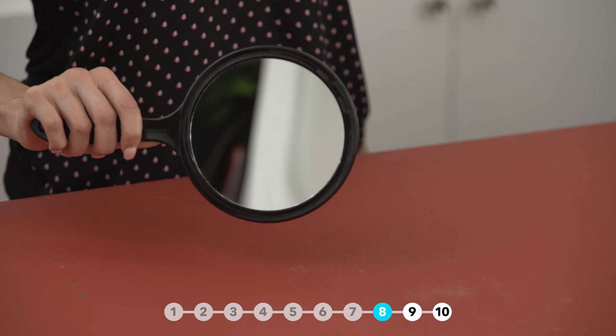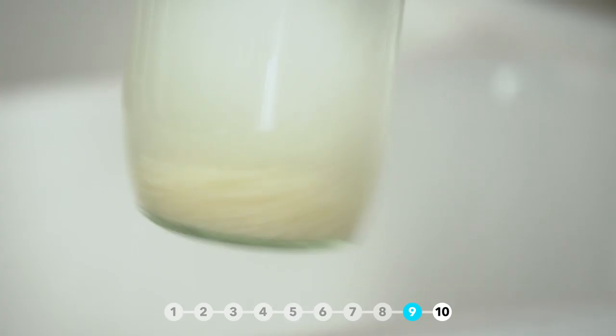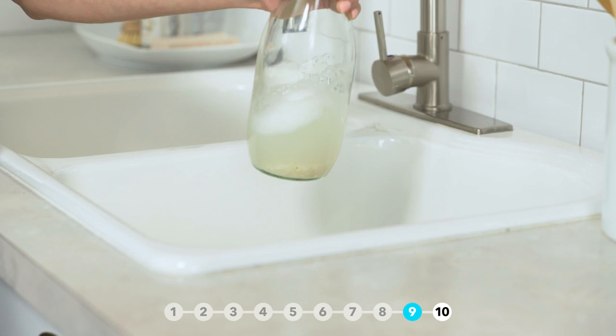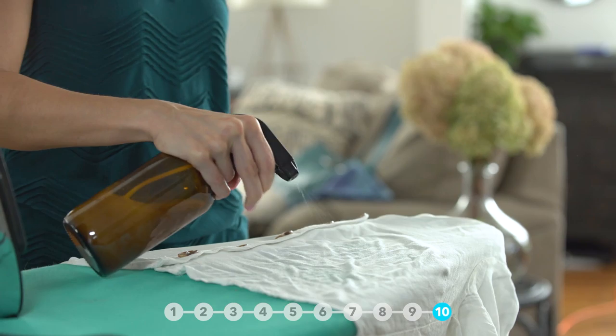Having a hard time cleaning the bottom of your carafe? Just add some soap and water and a few grains of rice to scrub it clean. Rice water acts as a natural starch spray for your clothing.